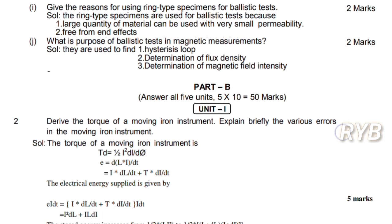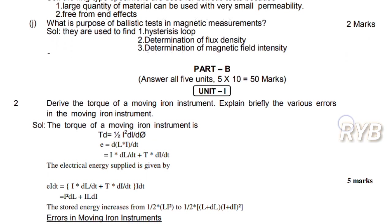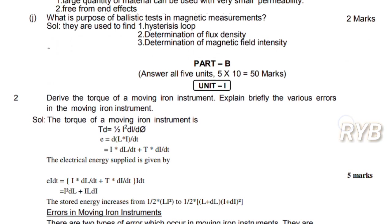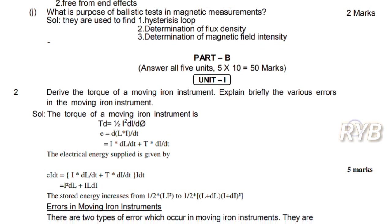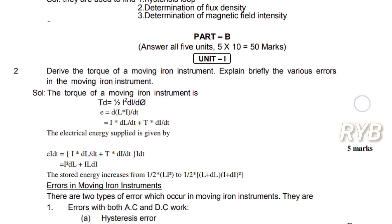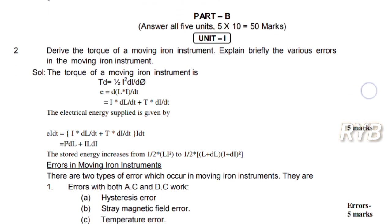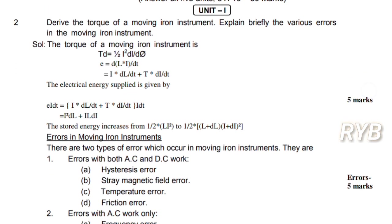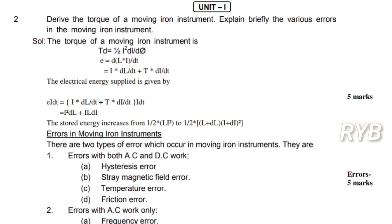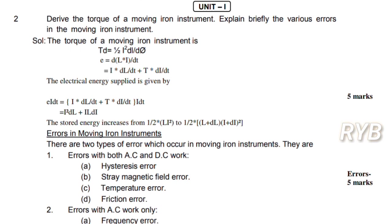Coming to Part B: how to answer Part B. Derive the torque of a moving iron instrument: T = ½ I² dL/dθ. How to derive that — the derivation gives five marks. Explain briefly the various errors in moving iron instruments, including errors due to AC only, frequency error, and similar errors.